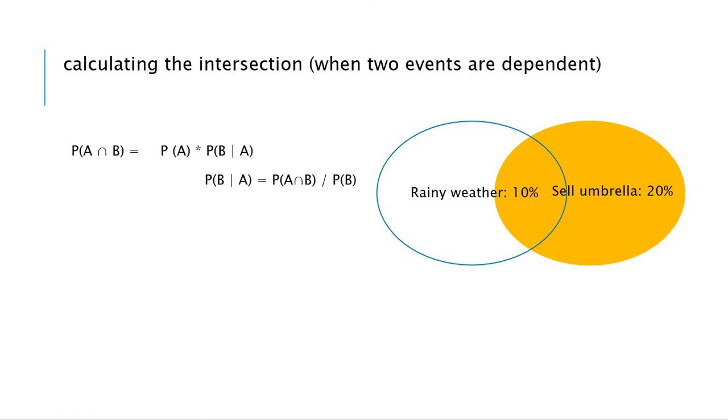And P of B given A we can denote as P of A and B divided by P of A.